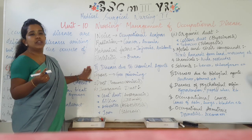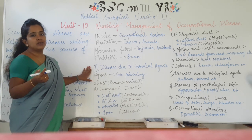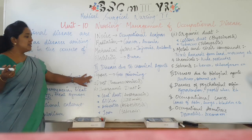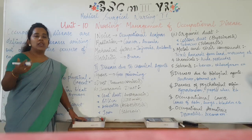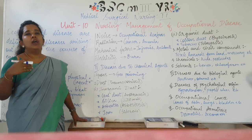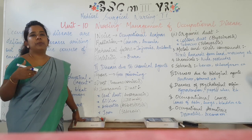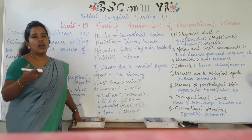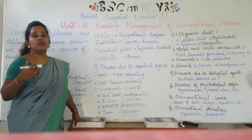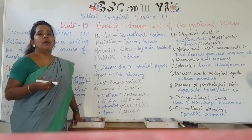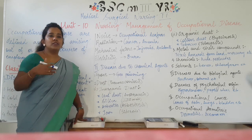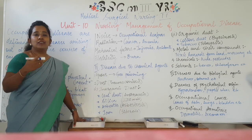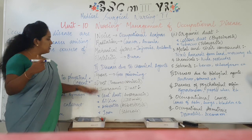The second classification is according to chemical agents. First is gases — in a working environment where people work in a gaseous environment, involved in manufacturing of a particular product with heavy gaseous exposure, inhaling those gases can cause gaseous poisoning.